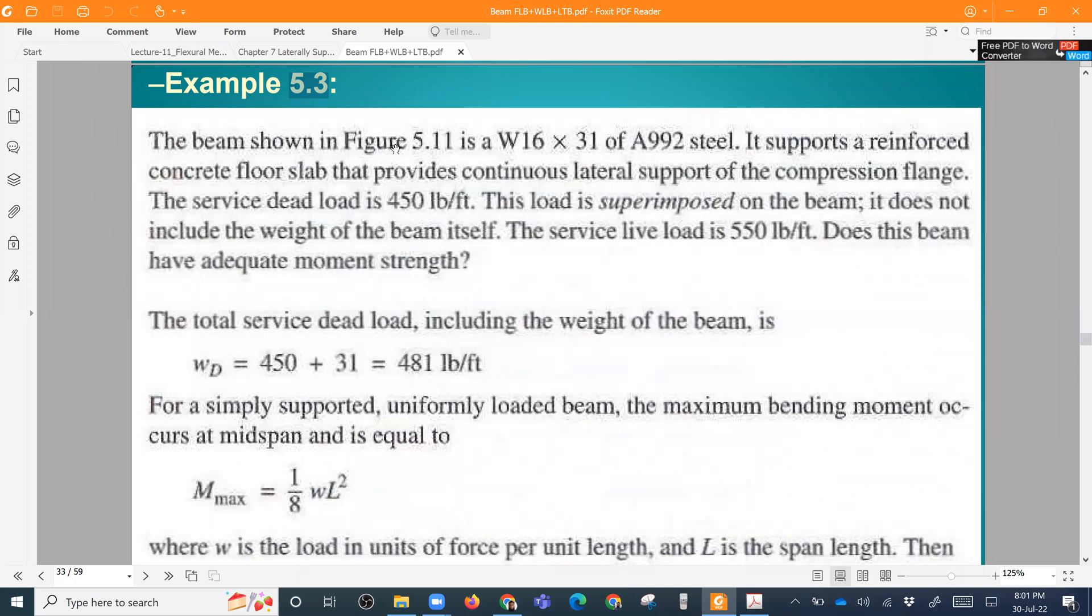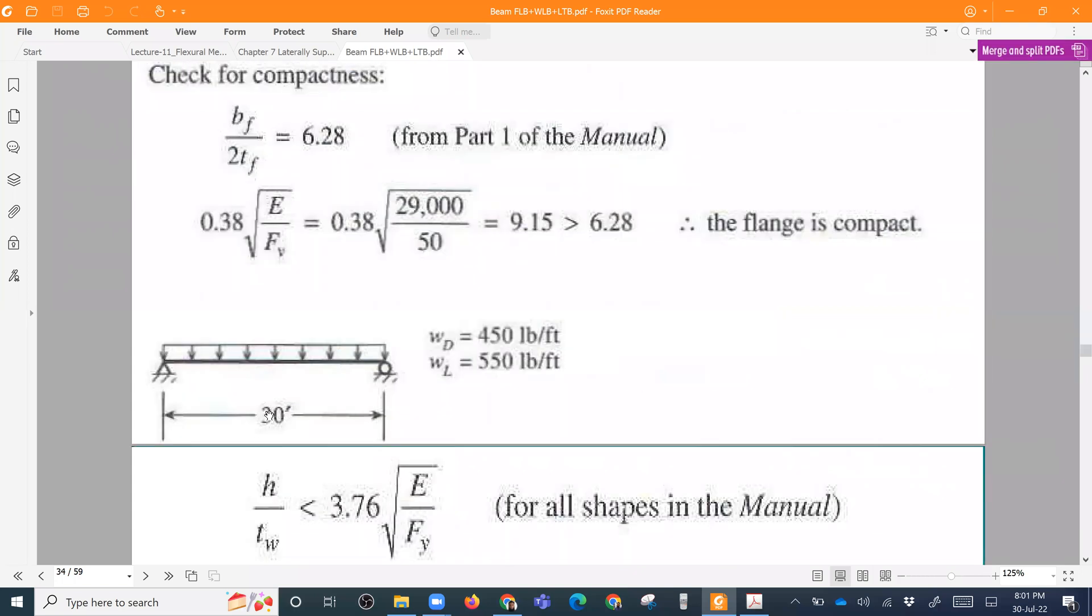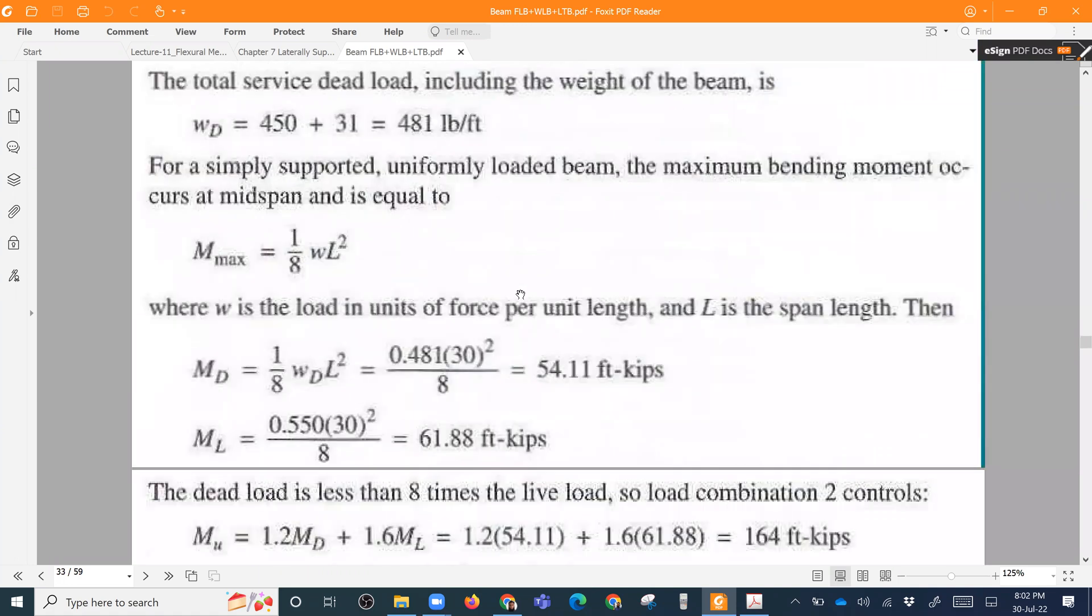This is our figure, a beam of length 30 feet acted upon by a superimposed dead load of 450 pounds per feet, that is 0.45 kip per feet, and live load 0.55 kip per feet. And this superimposed dead load is excluding the self weight.